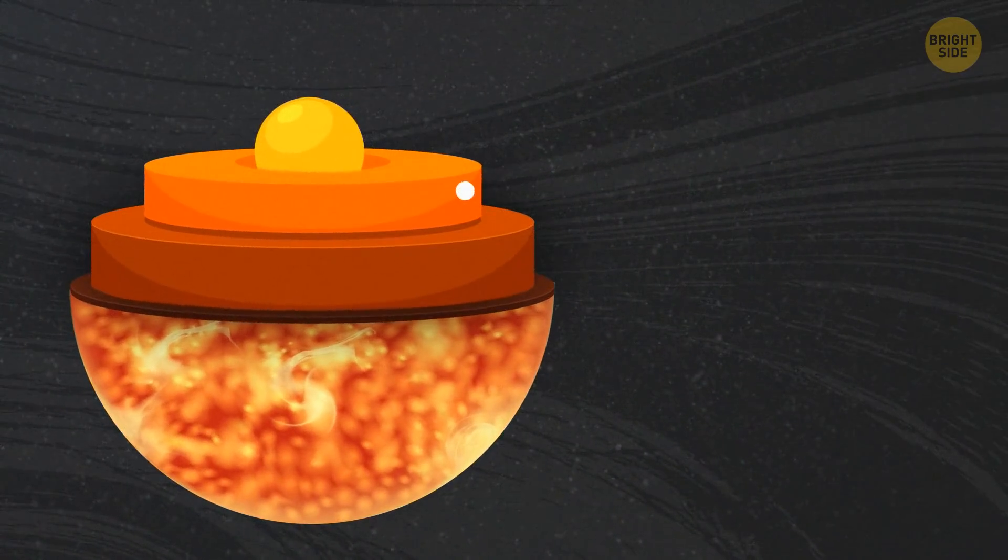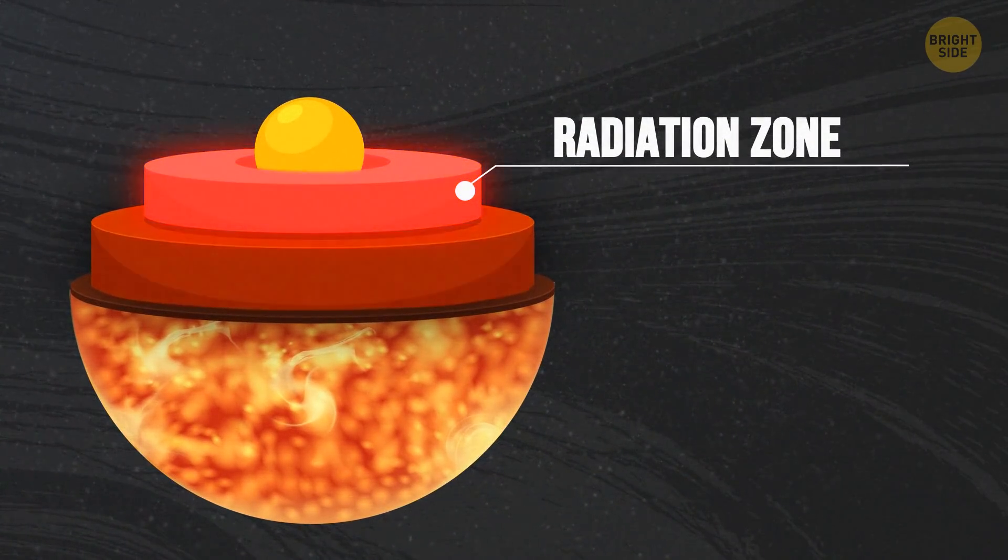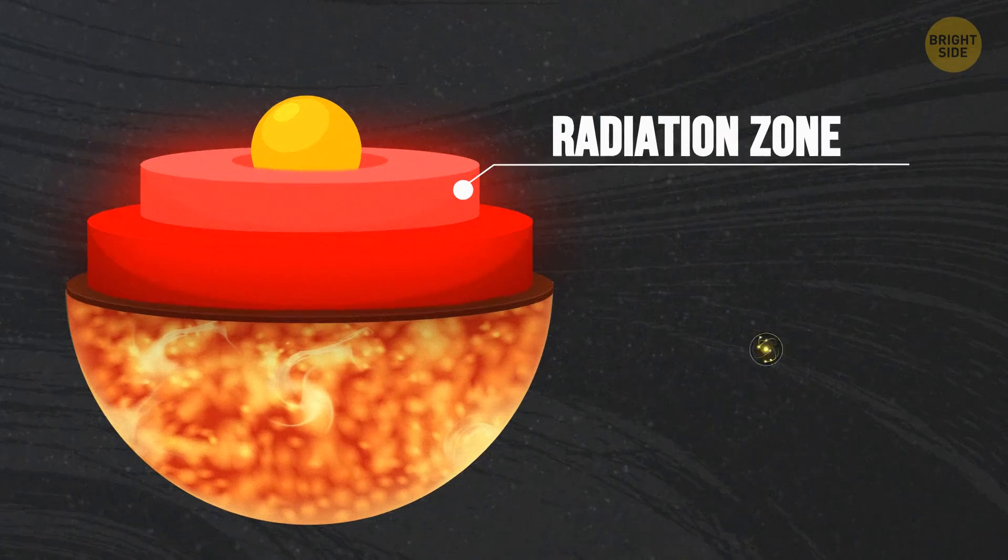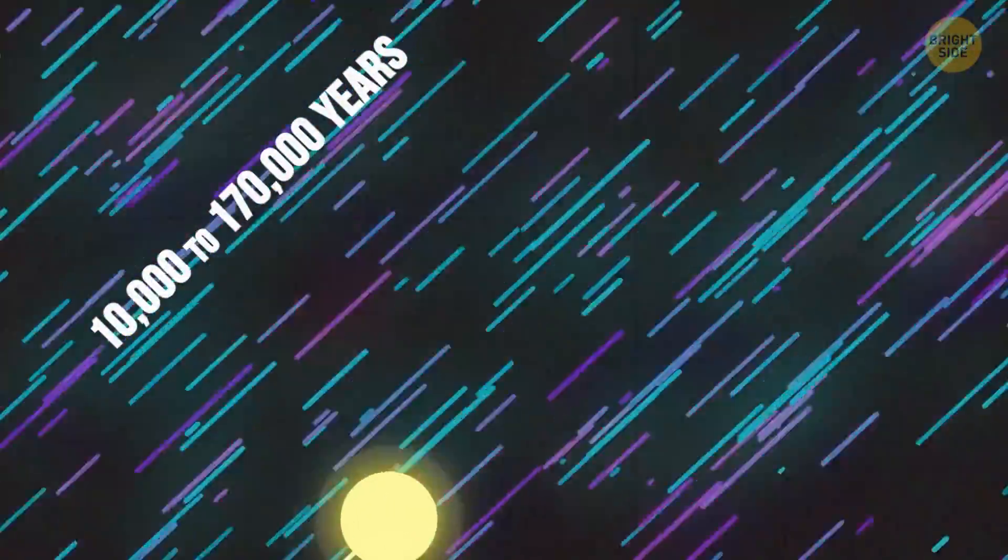The next layer is the radiation zone. This is where the heat is transferred from the core to the next layers. But the photons here don't move in an outward direction. They can be directed anywhere, and re-radiated many times. Scientists believe that the average time it takes a photon of light to travel from the core to the next layer of the sun is about 10,000 to 170,000 years.